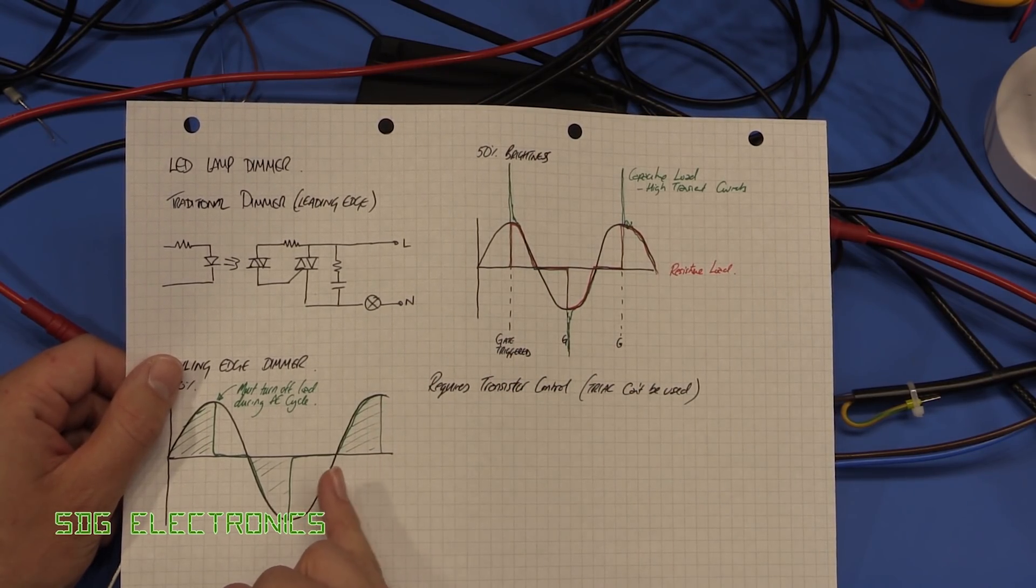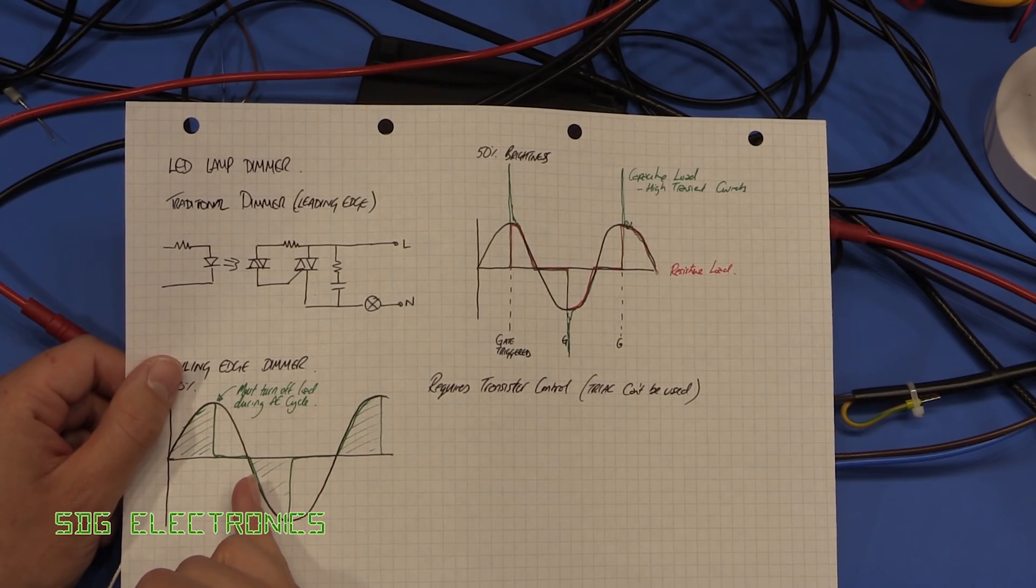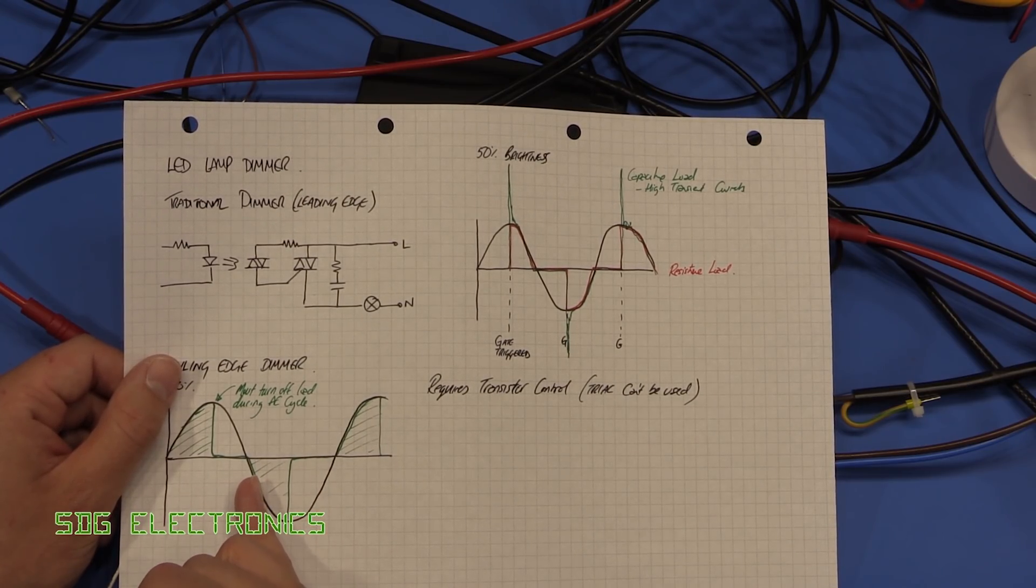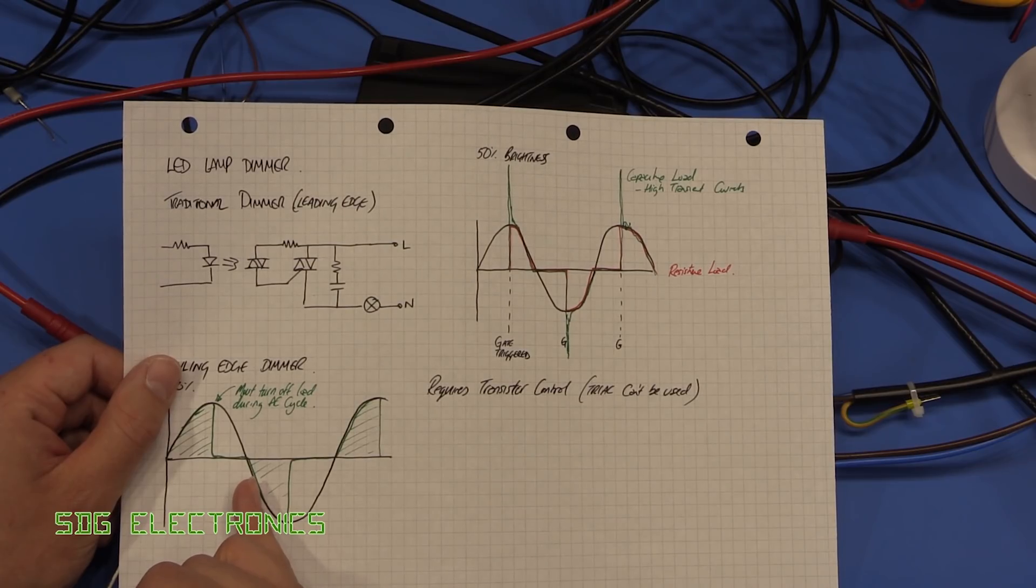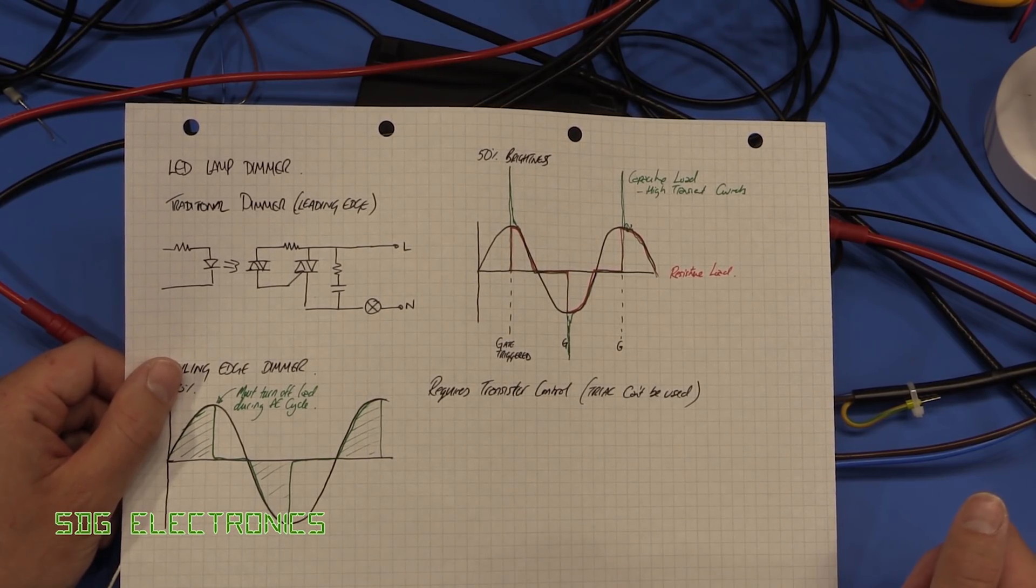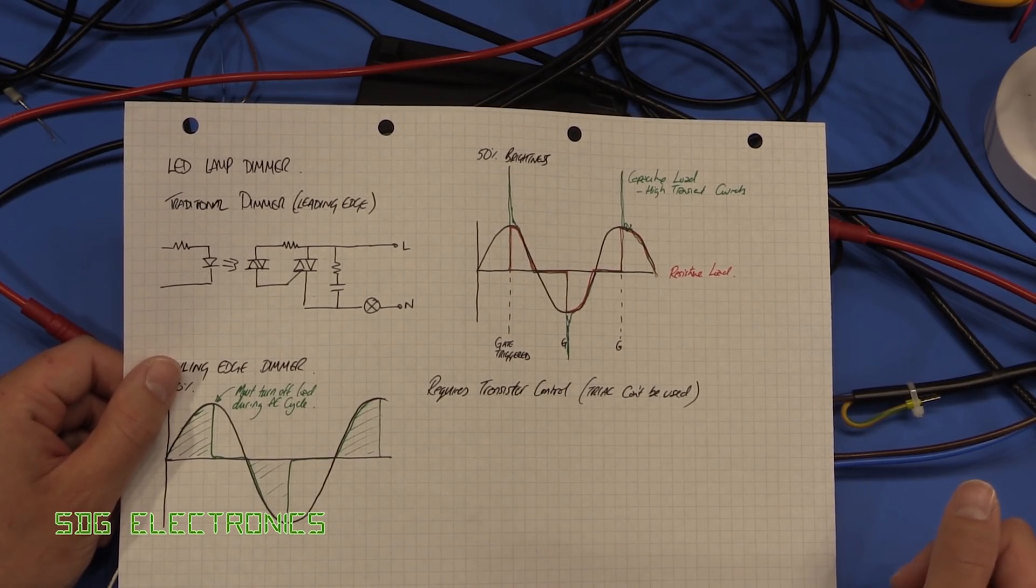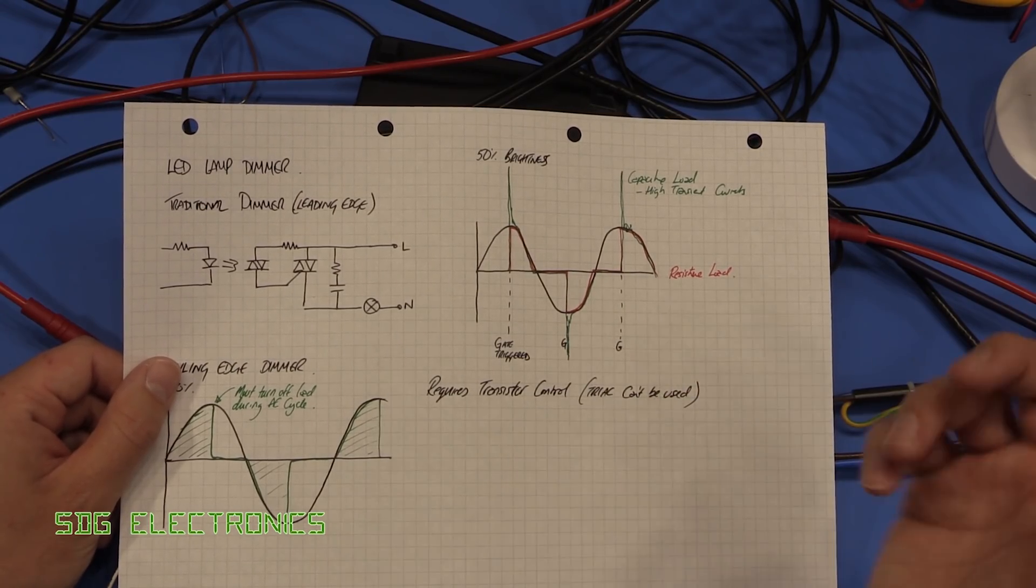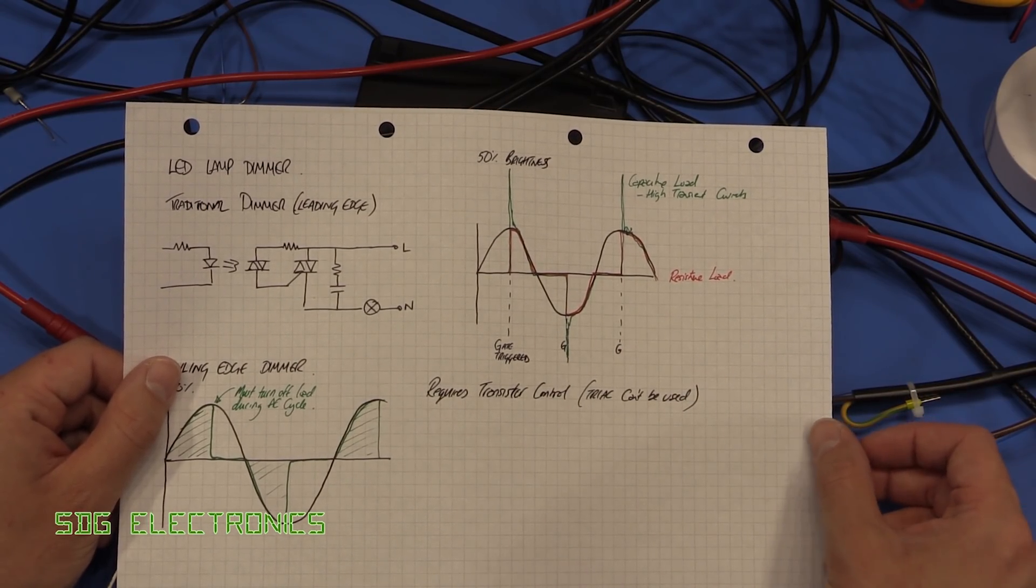And actually with a bit of analysis what was actually happening was the gate wasn't firing until quite a long way down the waveform so about this point here which is about 40 volts which means that it was trying to charge that capacitor immediately with 40 volts and with 14 of those quite a high amount of current.